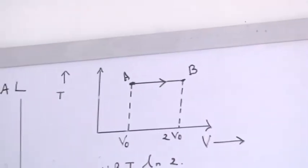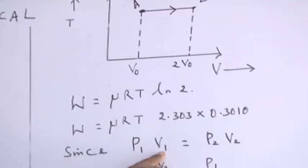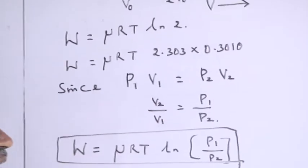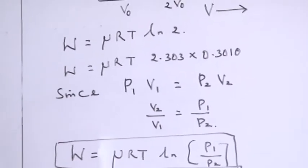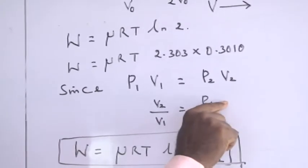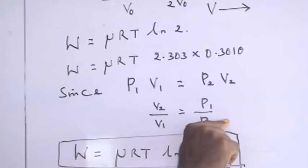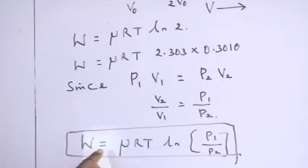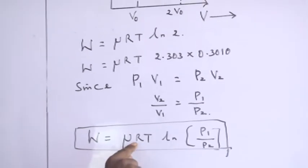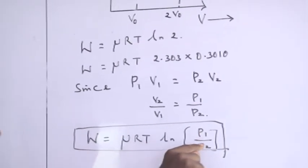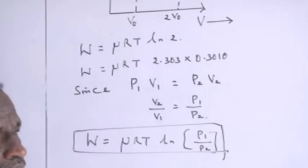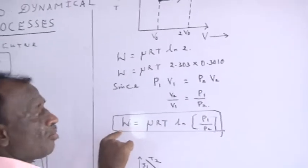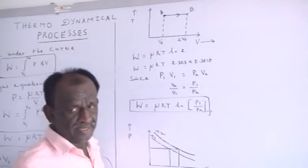We know P1V1 equal to P2V2 because the temperature remains constant. Therefore, V2/V1 can be represented as P1/P2. Therefore, W equal to μRT ln(P1/P2). Once the change in pressure is given, we can find the amount of work done using this formula.